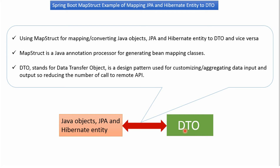We can also convert DTO to Java object, DTO to JPA, and DTO to Hibernate Entity. MapStruct is a Java annotation processor for generating bean mapping classes. DTO stands for Data Transfer Object, and it is a design pattern used for customizing or aggregating data input and output, reducing the number of calls to the remote API.